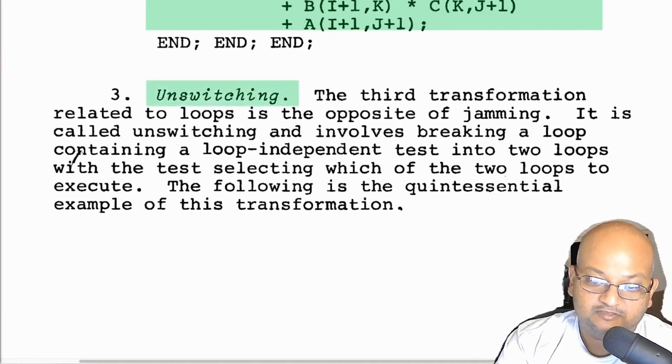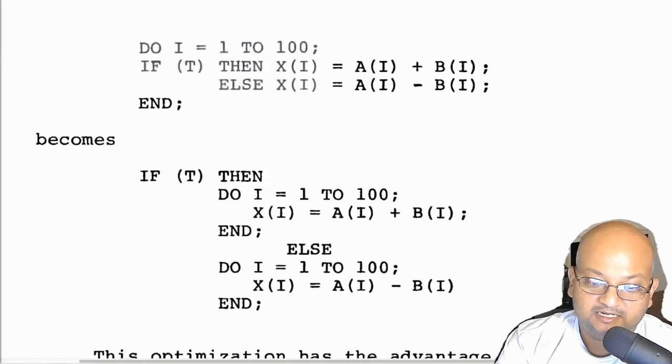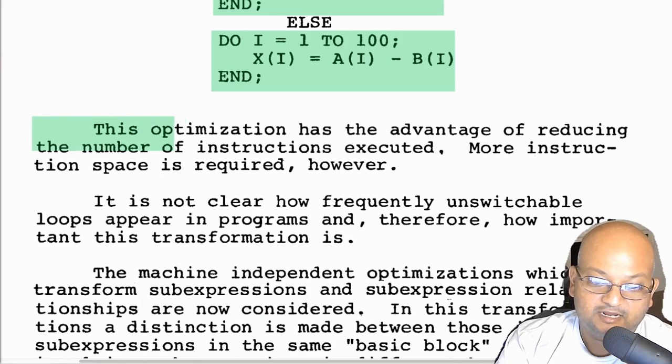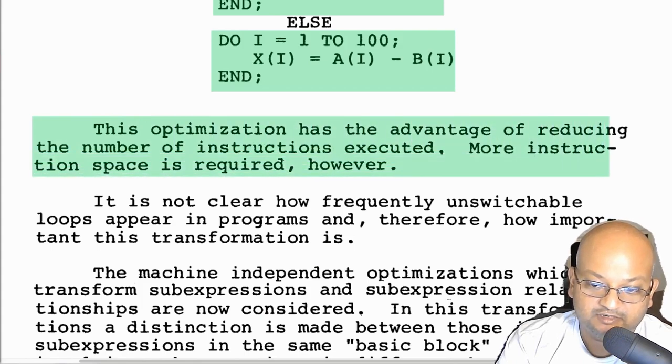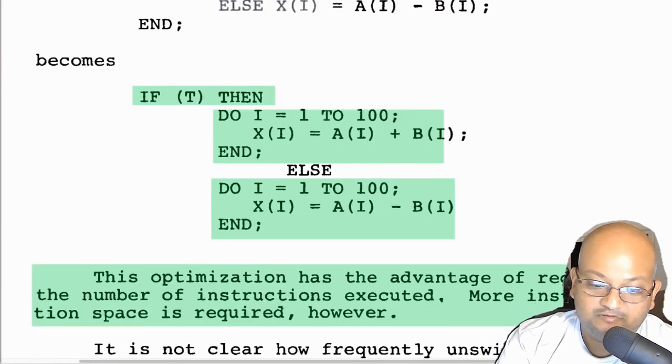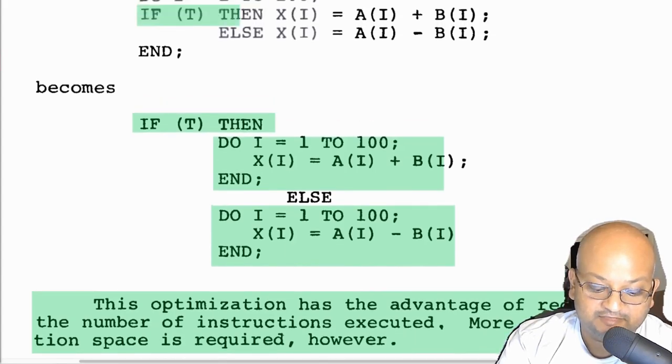The next loop transformation is called unswitching. The basic idea is that if within the body of the loop you have an if statement, you could actually take the if statement outside the loop and then perform two separate loops depending on the condition. Again, the trade-off is the same: you reduce the number of instructions executed, but you might increase overall code size. The number of instructions is reduced because you are not testing the condition of the if statement inside the body of the loop. You just test it once before you enter the loop.